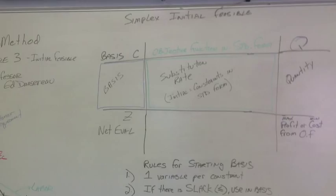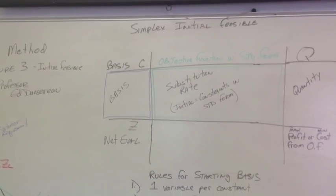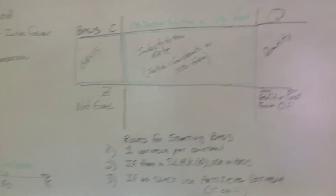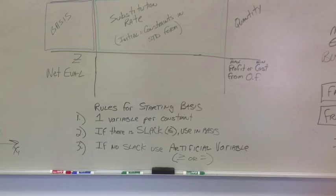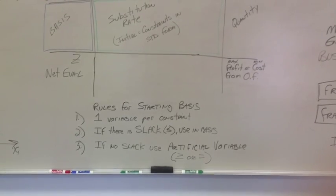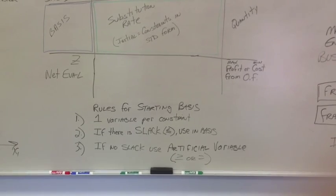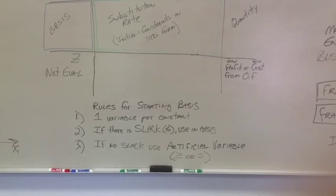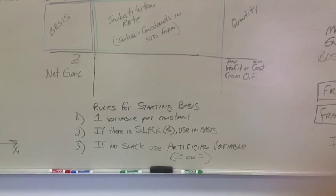Alright, the first thing we're going to start out with the basis. What variables and what constants do we put in the basis? And the rules for the initial basis are just that. There's one variable per constraint. So if we have two constraints, there'll be two variables in the basis. If we have three constraints, we'll have three variables and so on.